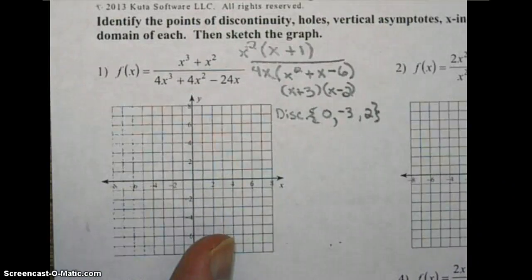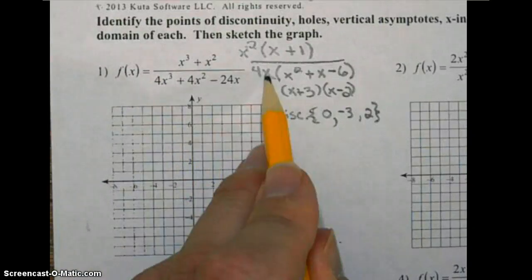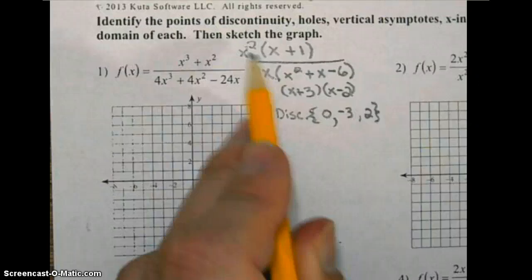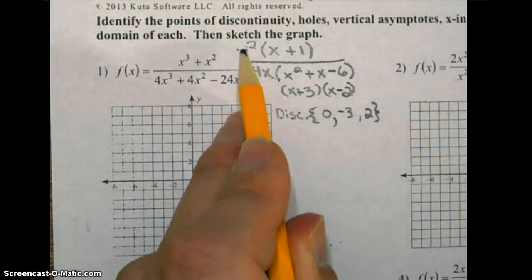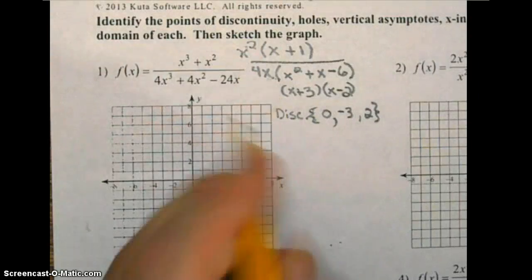Moving on, holes. We have a hole at x equals zero because up here the x's cancel. These two factors will cancel, this is x times x, so an x will cancel with an x, so we have a hole at x equals zero.